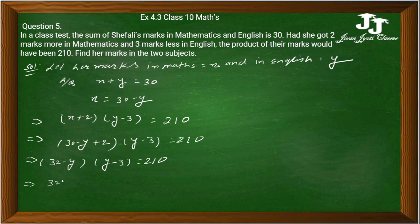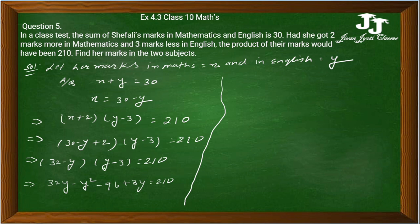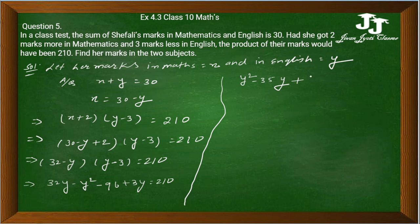करते हैं: 32y minus y square minus 96 plus 3y is equal to 210. ठीक है, यह सब को इधर लेकर आते हैं तो y square minus 35y plus 306 is equal to zero.